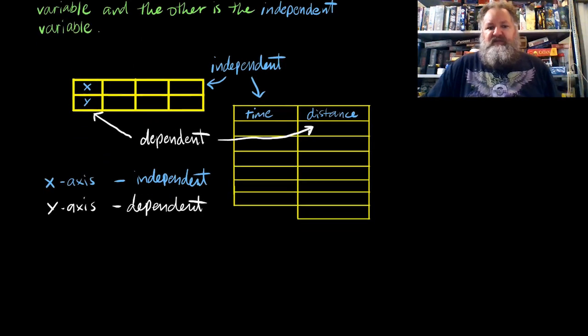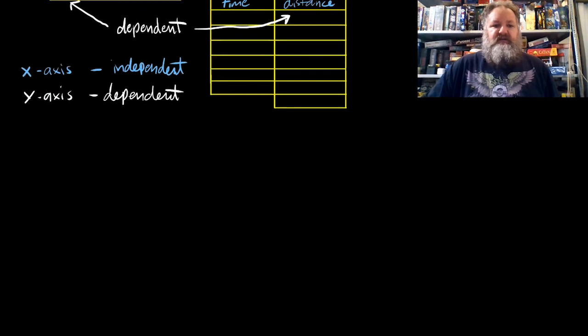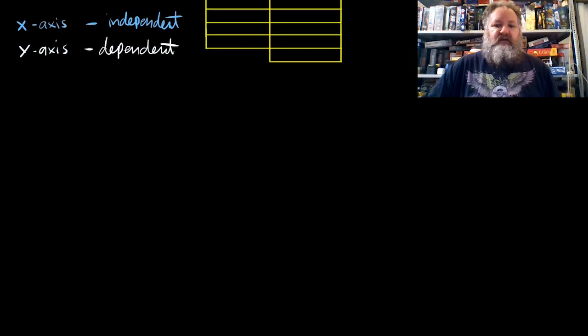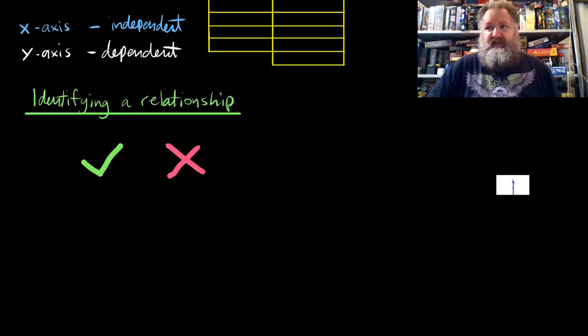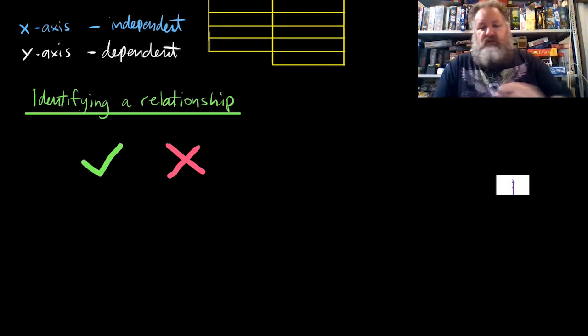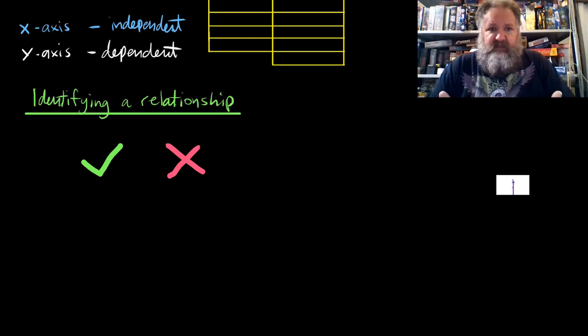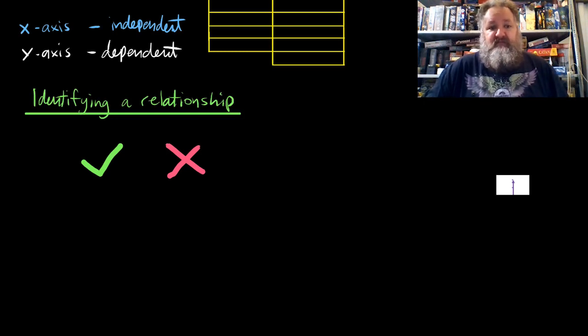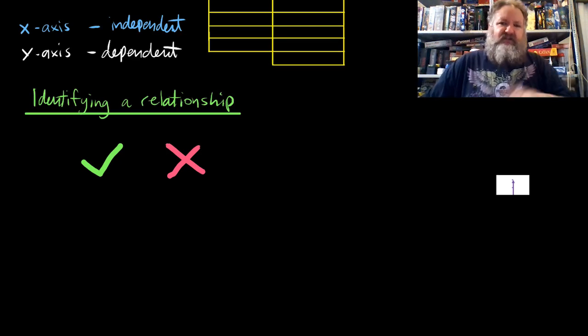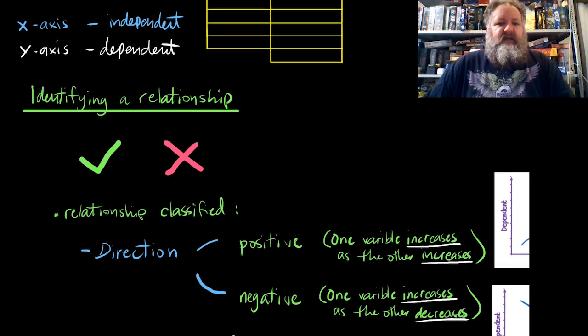Bivariate data is important to know about. Now as we're graphing these things, we can actually start to identify relationships that exist within that data. First and foremost, we can say that there is a relationship between data - big green tick - or there is no relationship - big red X. So every set of data, we can choose whether it is in a relationship or not. Now there are classifications for these relationships which we'll go through.